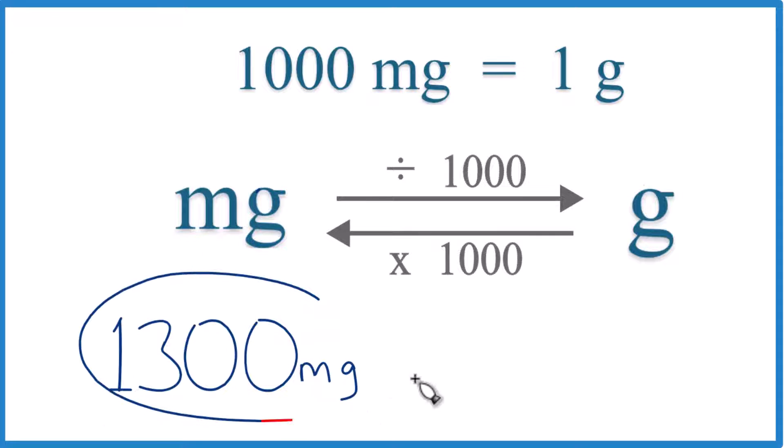Here's how you can convert 1,300 milligrams to grams. So 1,000 milligrams equals 1 gram. There are 1,000 milligrams in 1 gram.